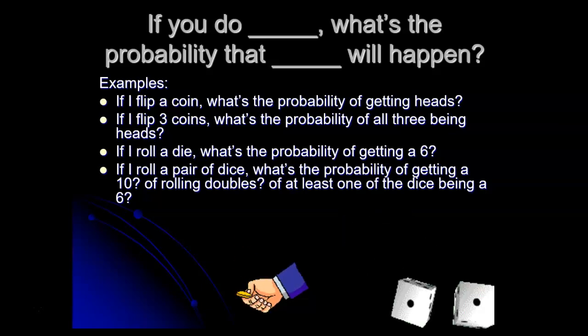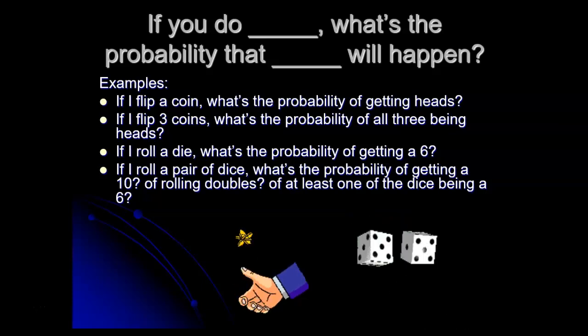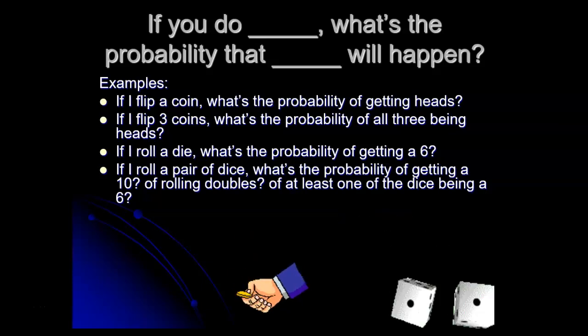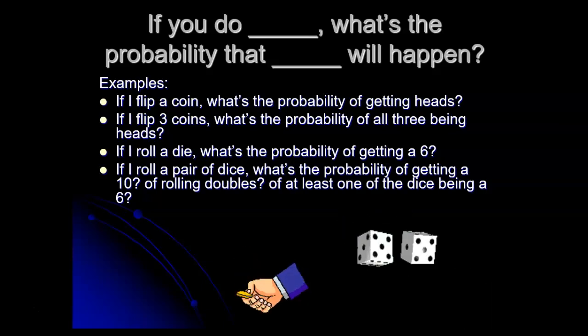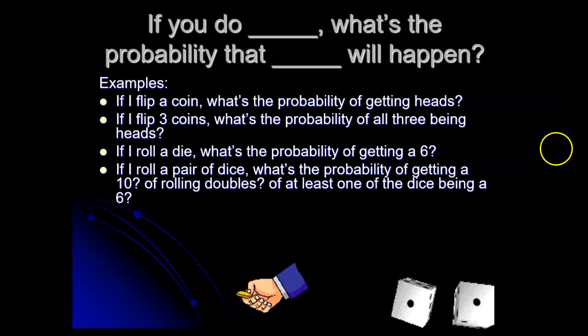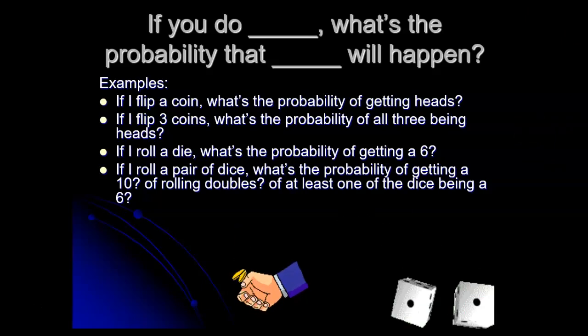Questions like this, involving flipping coins, rolling dice, picking cards out of a deck, these are often used as examples when you're talking about probability, because they're fairly simple, and you can spell out what all the possible outcomes are, and you can treat them as all equally likely. So, even though they're kind of artificial, they make good example questions.